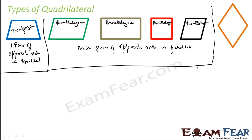Both opposite sides are parallel, so they are called parallelogram. So in one case only one pair of opposite sides is parallel — that's trapezium. If both pairs of opposite sides are parallel, then it is called parallelogram. This is a different case we will talk about later.